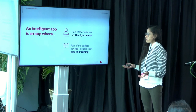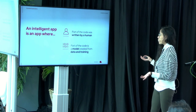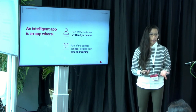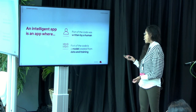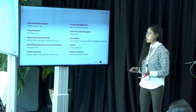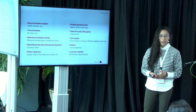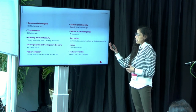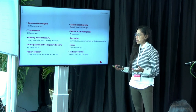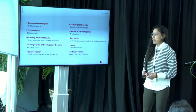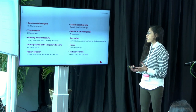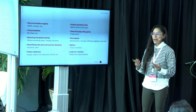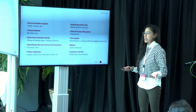What is an intelligent application? It's an application where part of the code is written by a human, and the other part is created by a model trained with data. Some of the most common use cases for intelligent applications include recommendation engines, virtual assistants, fraud detection, and money laundering detection — things that require making decisions best learned from existing data.